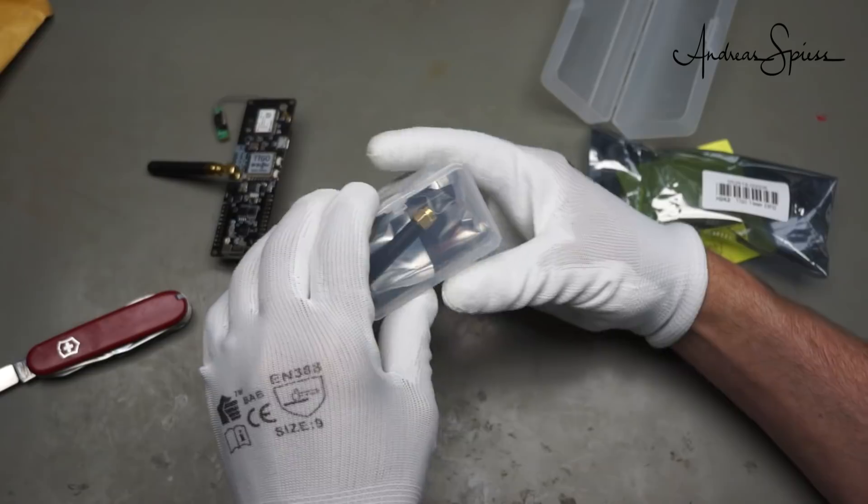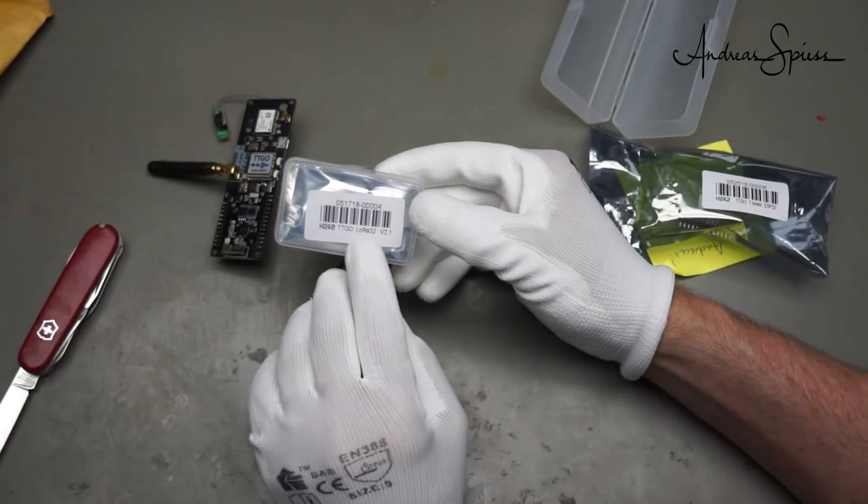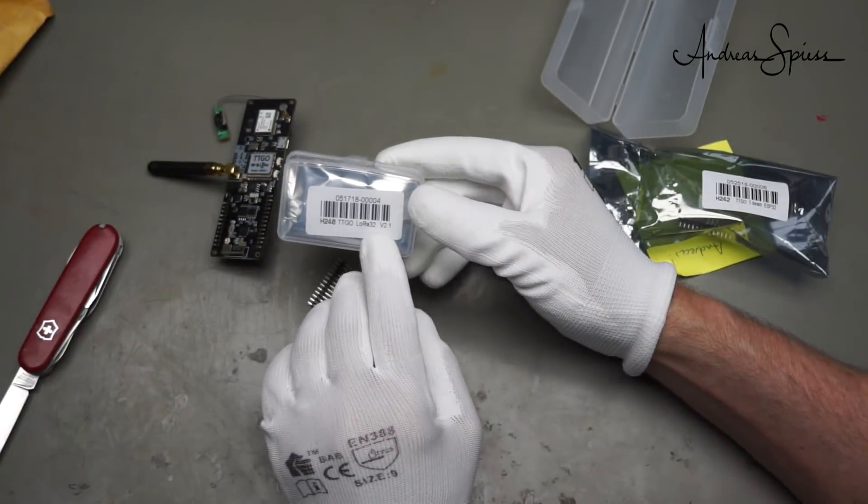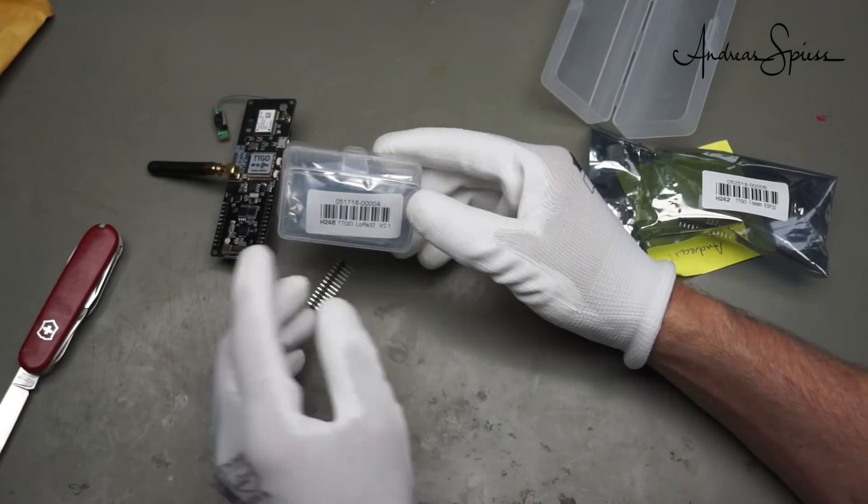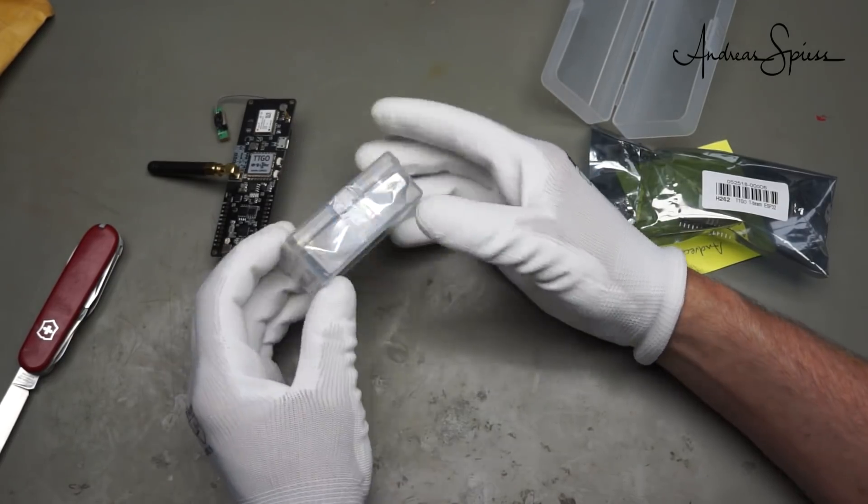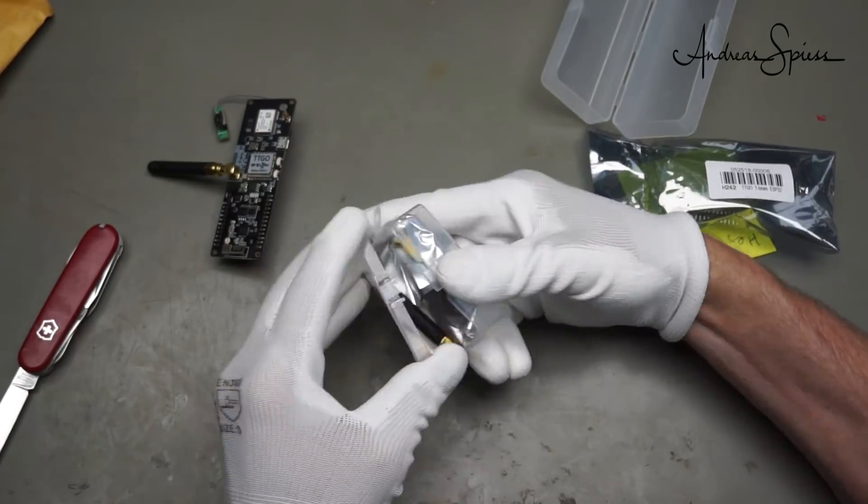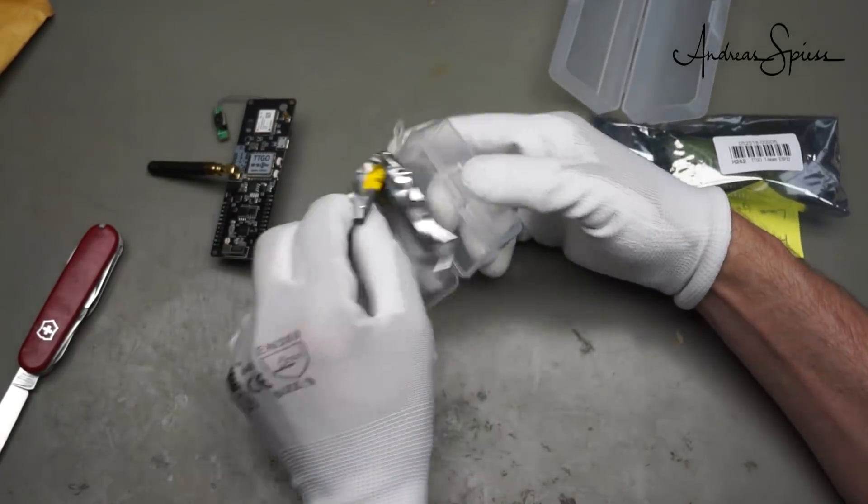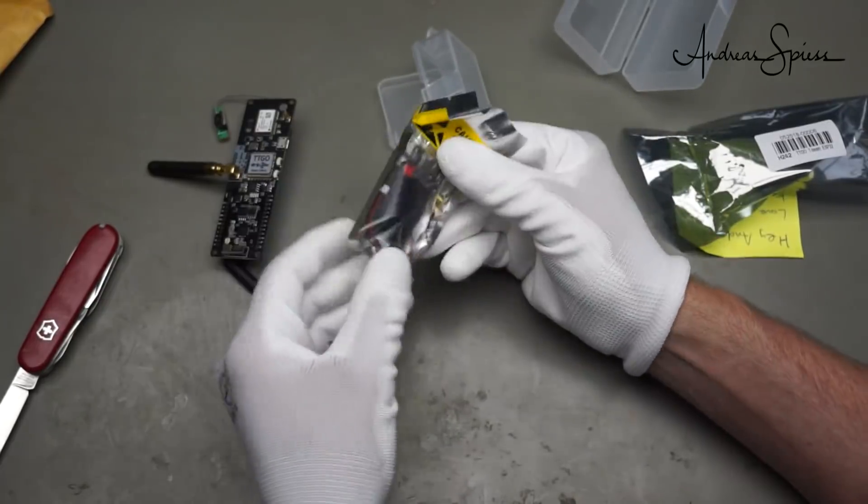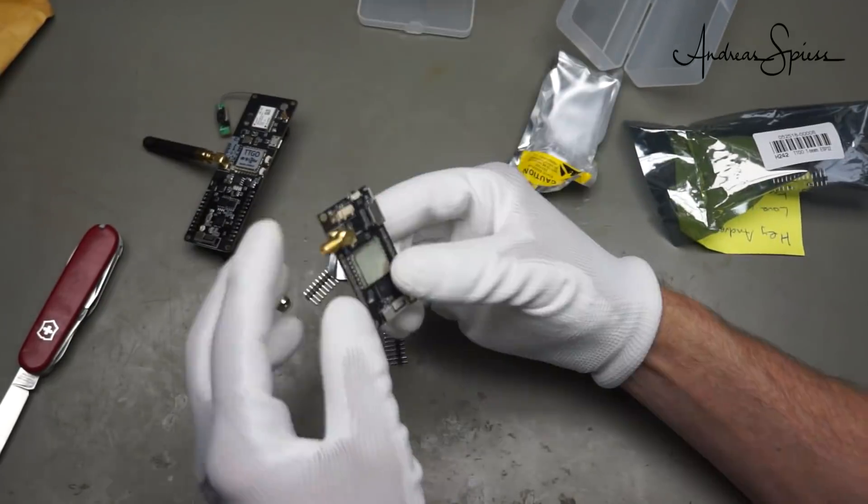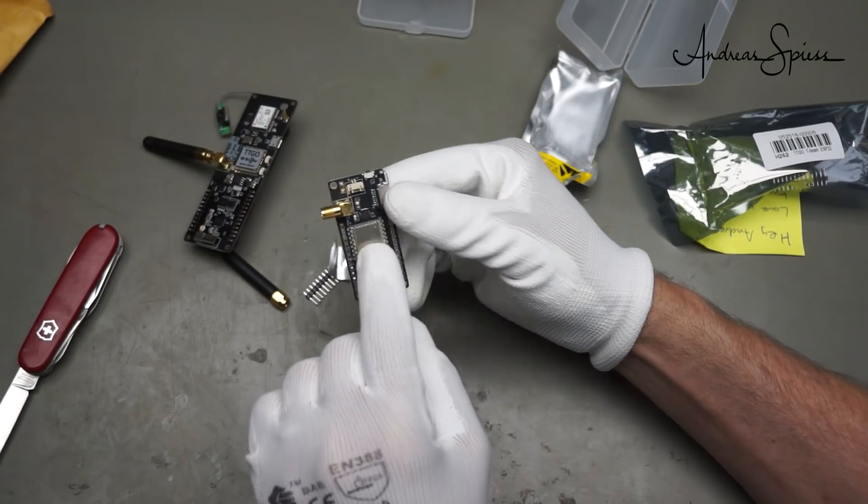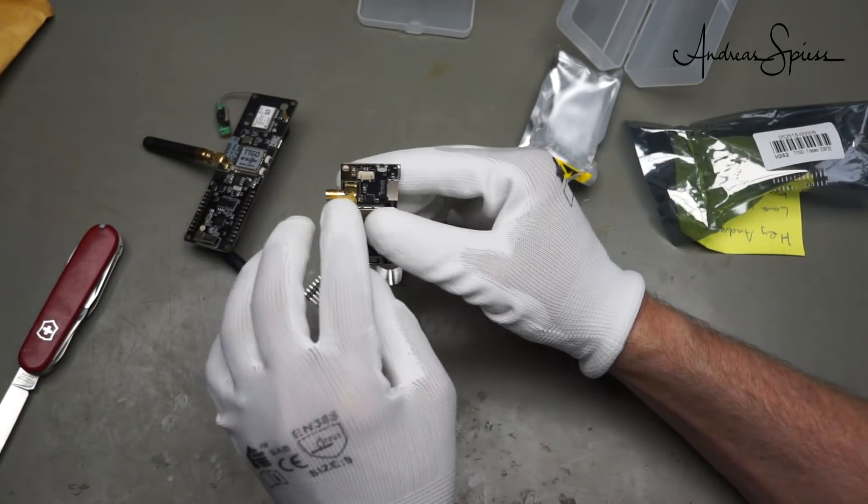The next one looks like something I know. It is a TTGO LoRa 32 2.1 version. Actually I only have the 2.0 version. So I can check then what the difference is between the 2.0 and the 2.1 version. It looks similar.